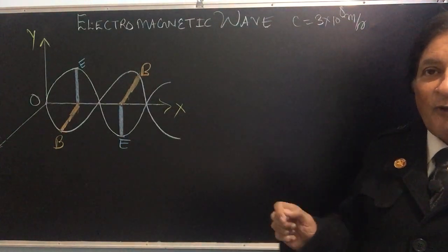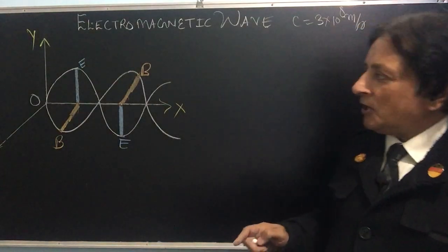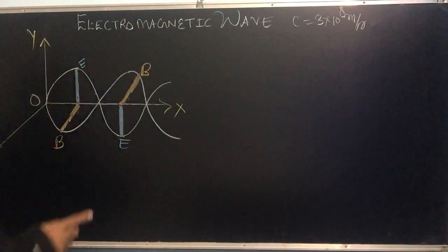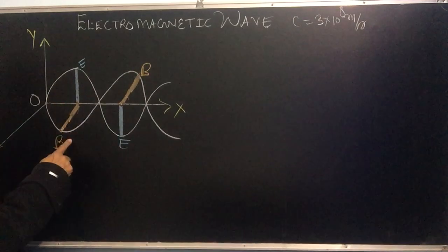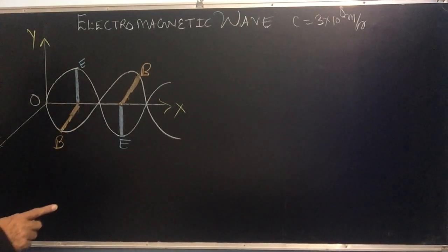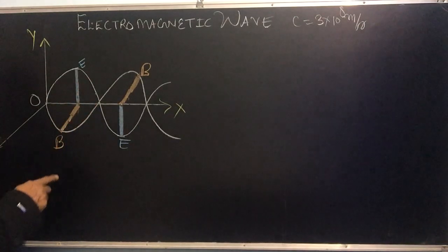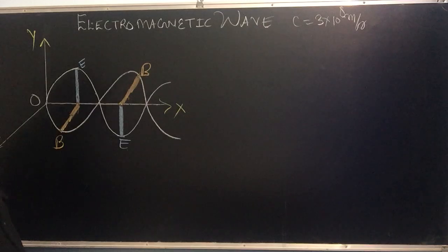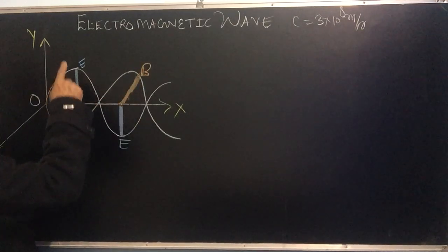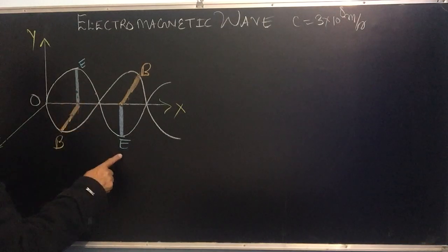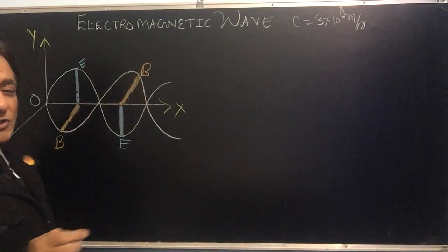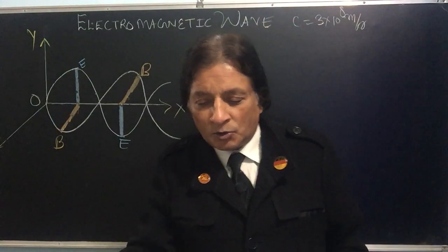Light is an electromagnetic wave. In light there are two components — one is the electric field and the other is the magnetic field. The electric and magnetic fields are mutually perpendicular. The magnetic field shifts along OY and the electric field shifts along OY dash. You can see that this is a transverse wave.